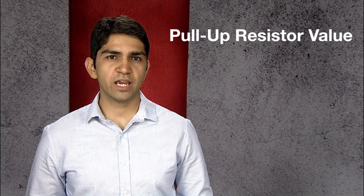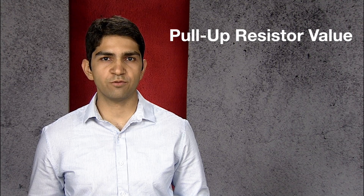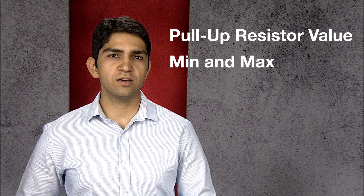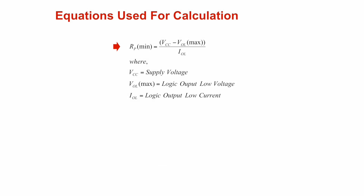The pull-up resistor value can be a number between a range of resistor values — the min and the max. The minimum value of the pull-up resistor depends upon certain criteria. A very small value of the resistor, and thus a stronger pull-up, may prevent the I2C pin on an IC from being able to drive low.